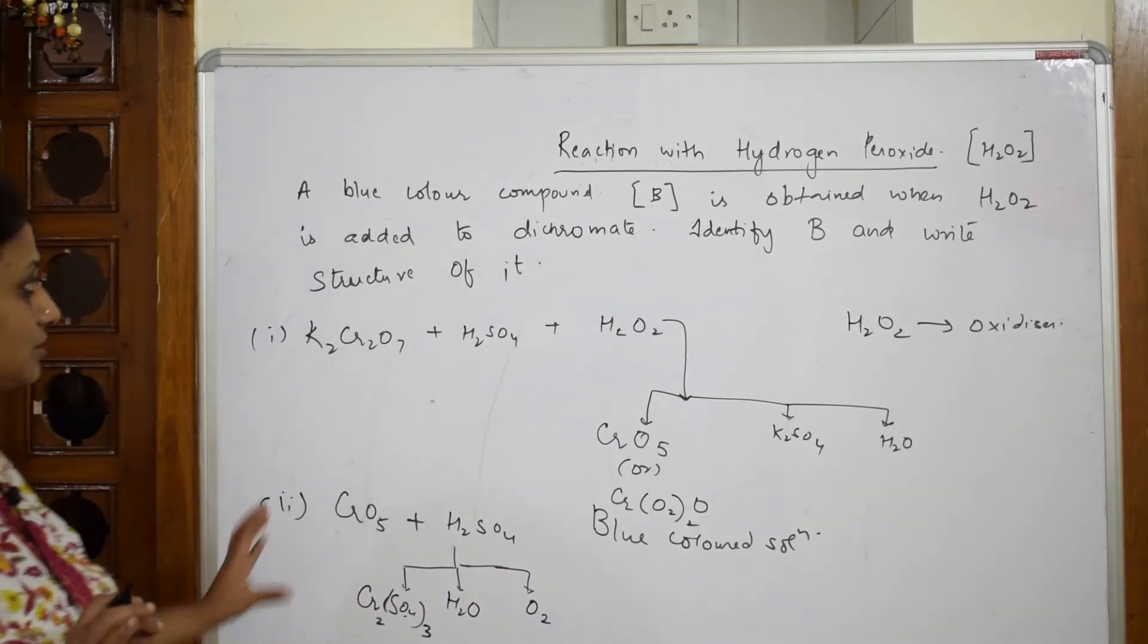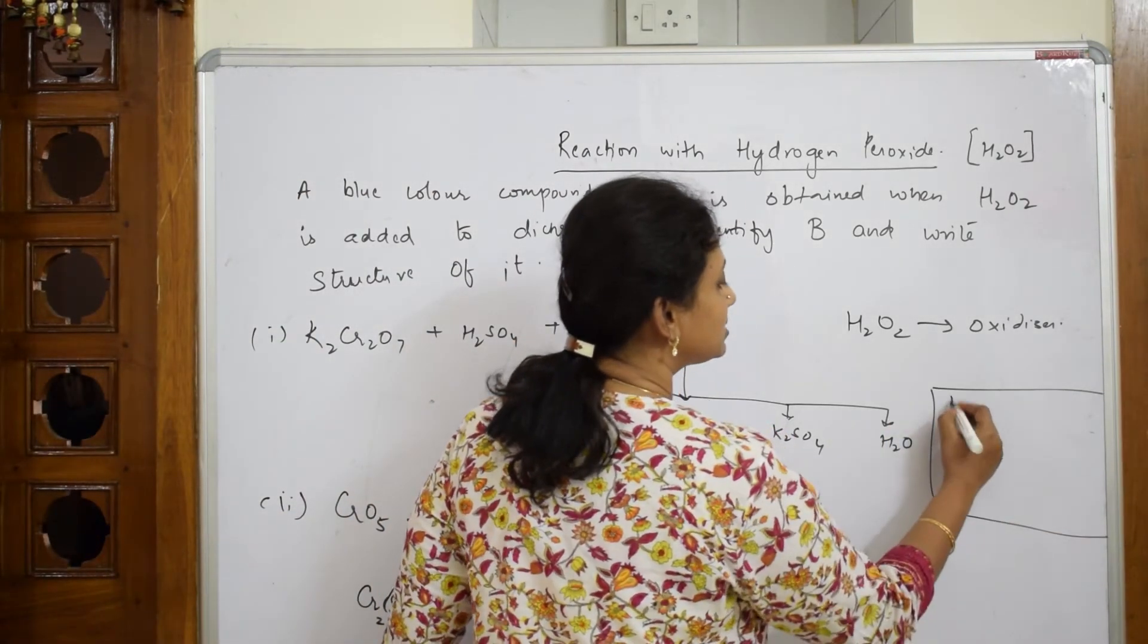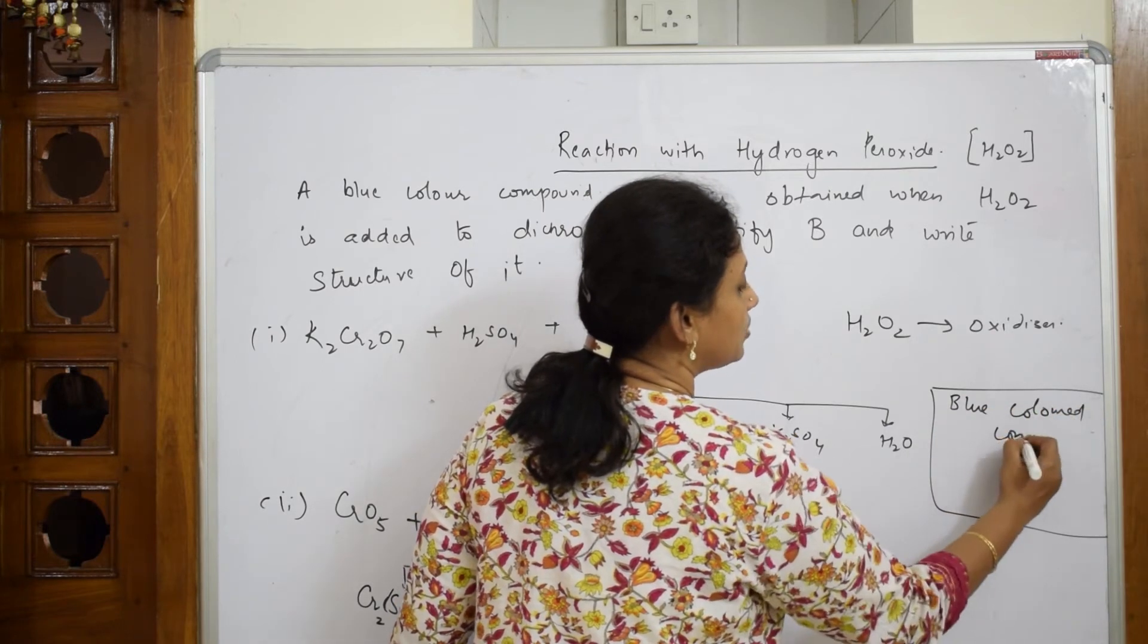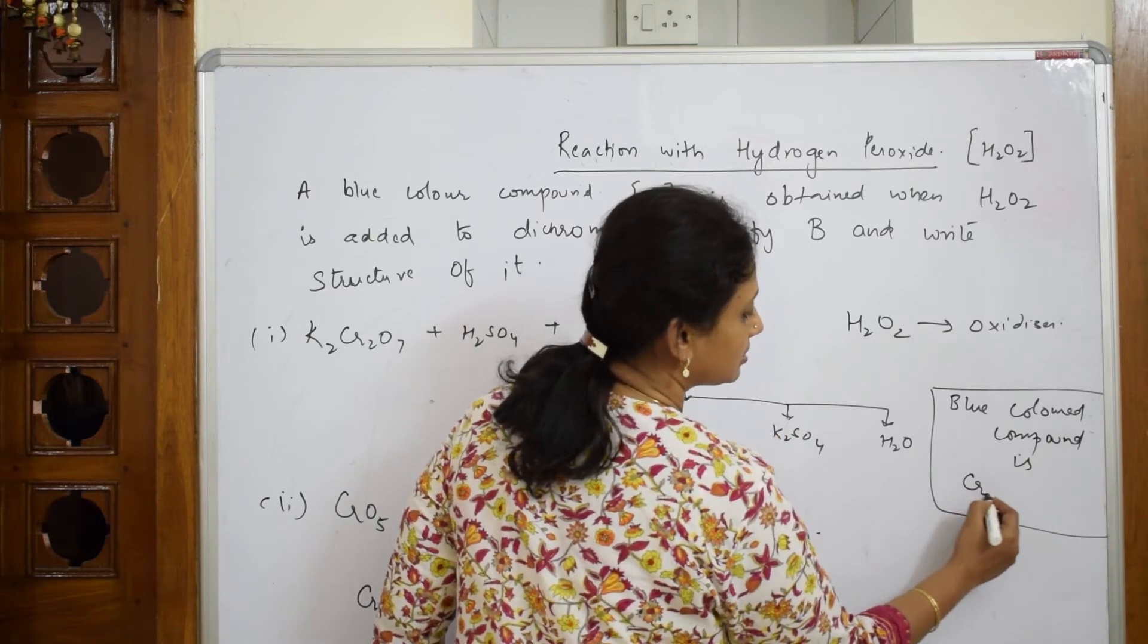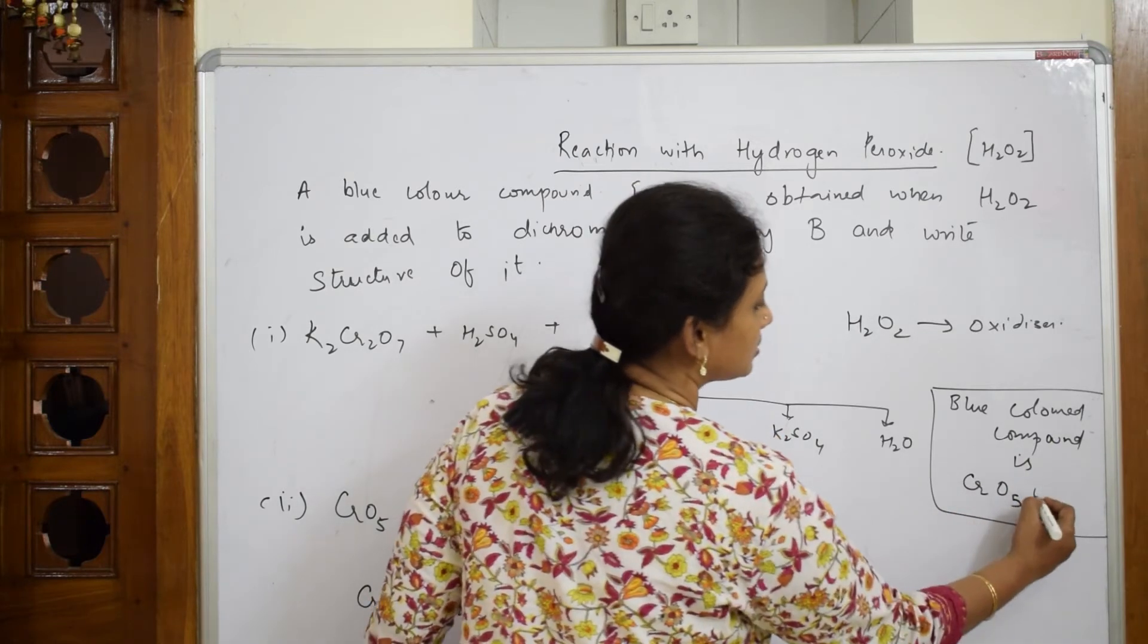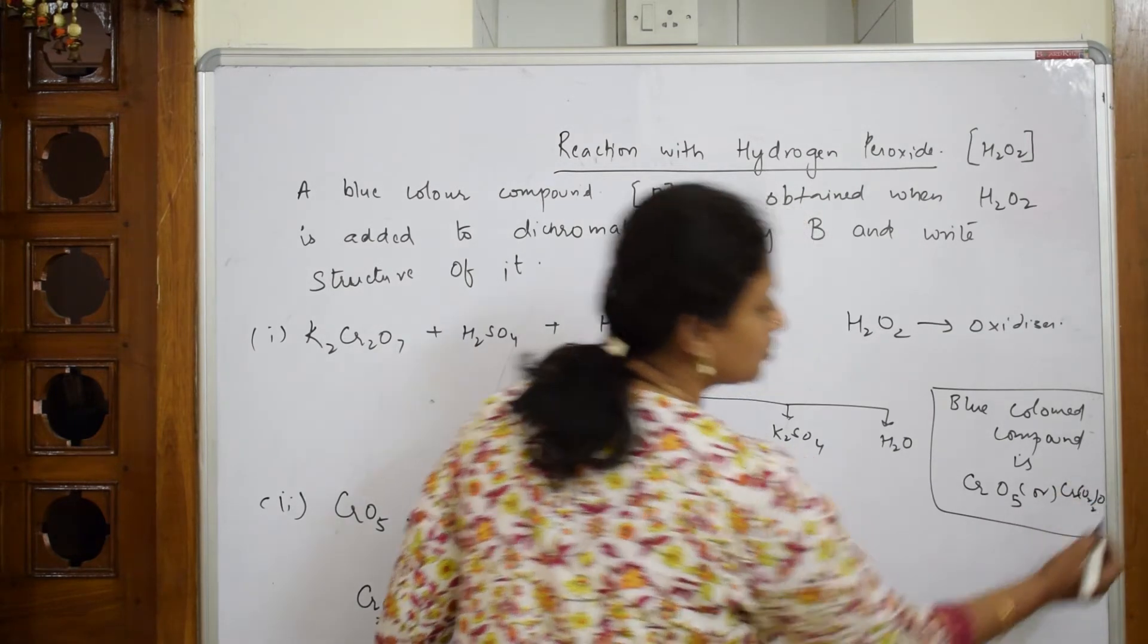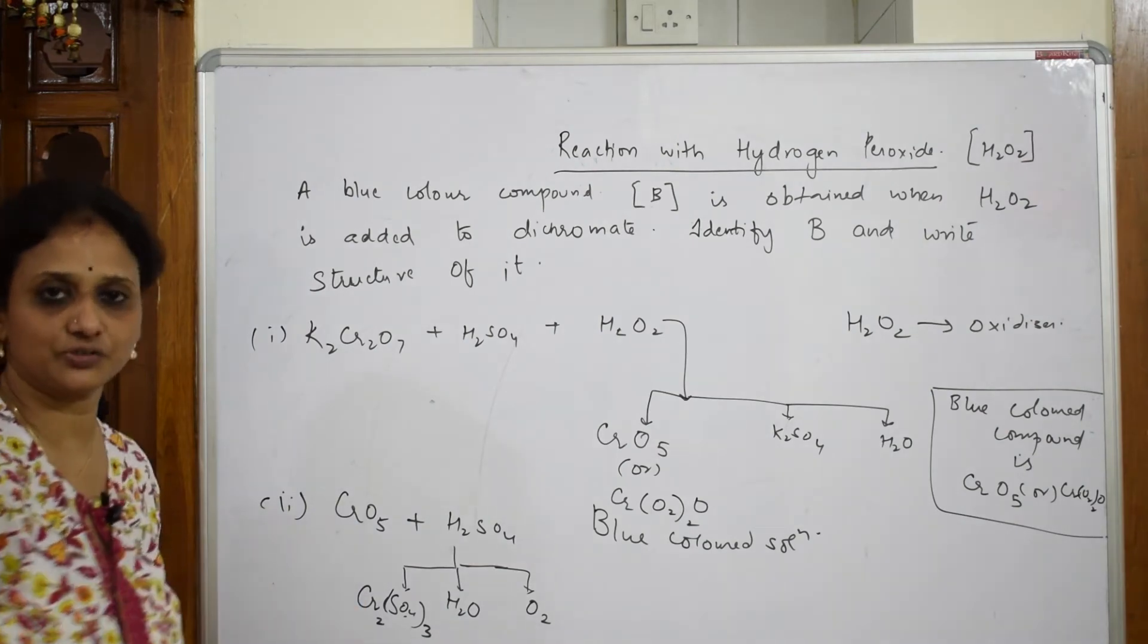These are the important things. So the blue colored compound - you can write it as an answer: a blue colored compound is CrO₅ or Cr(O₂)₂O. Now let us come back and draw the structure of this.